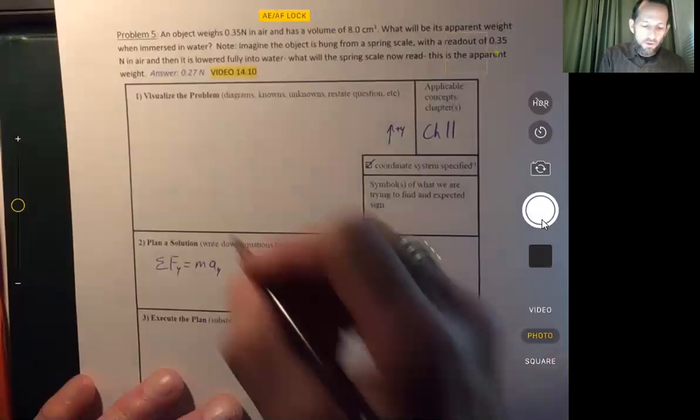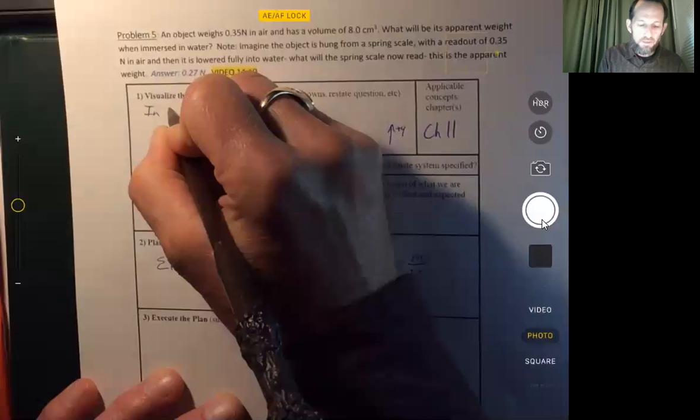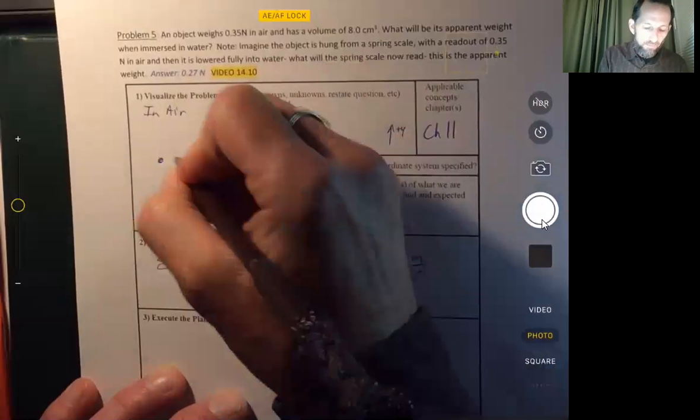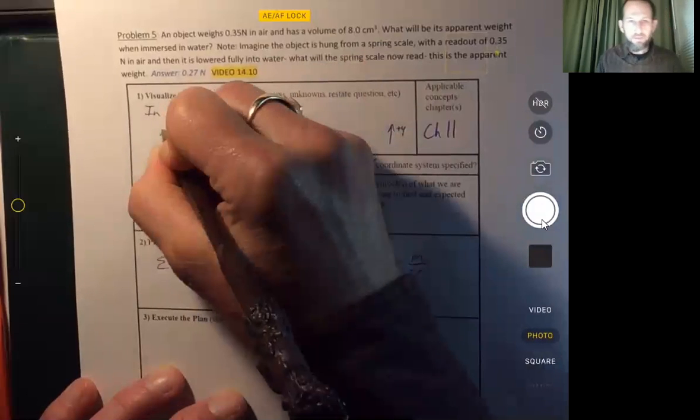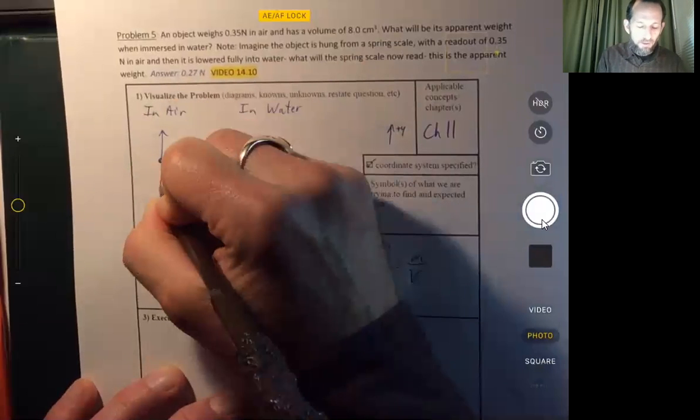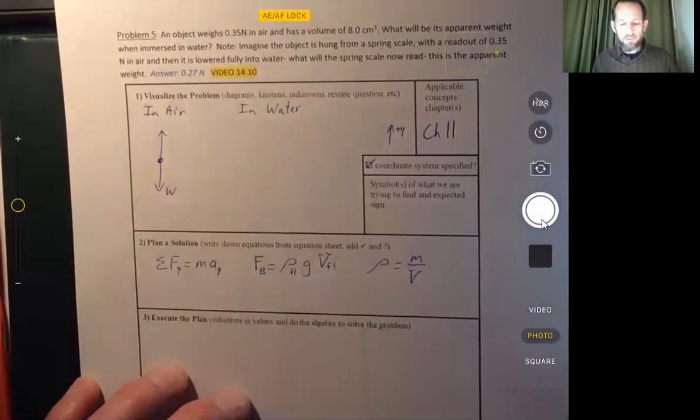And so we're going to draw two free body diagrams for this problem, one in air and one in water. When it's in air, there's a force upward, and then there's the weight of whatever the object is. And what's that force upward?